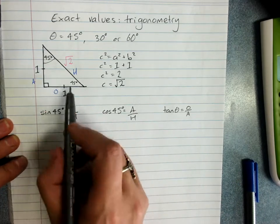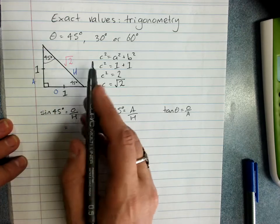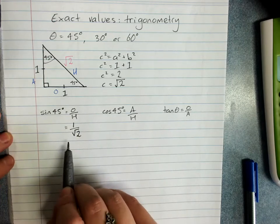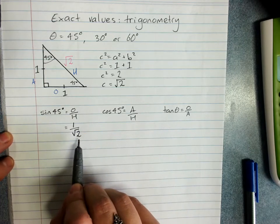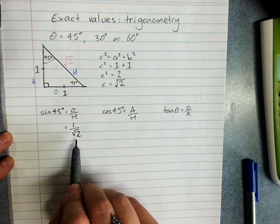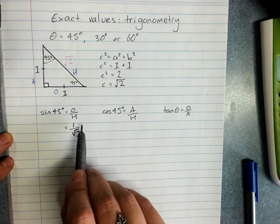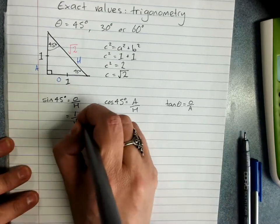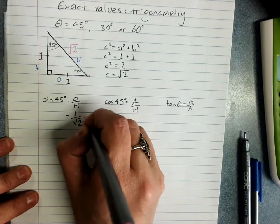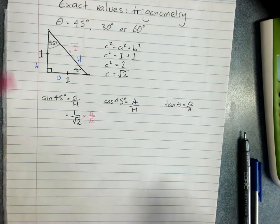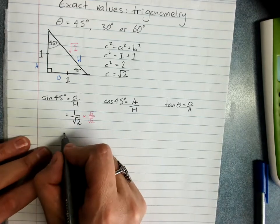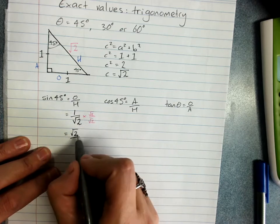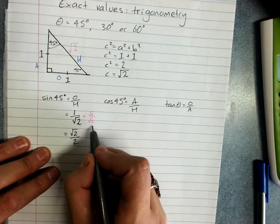If we fill this in, sine of 45 is 1 over root 2. As you'll recall, it's not necessarily useful to have a third on the bottom. So if we rationalize the denominator by multiplying by root 2 on root 2, we would get sine of 45 degrees is root 2, 1 times root 2, on 2. Root 2 times root 2 is 2.